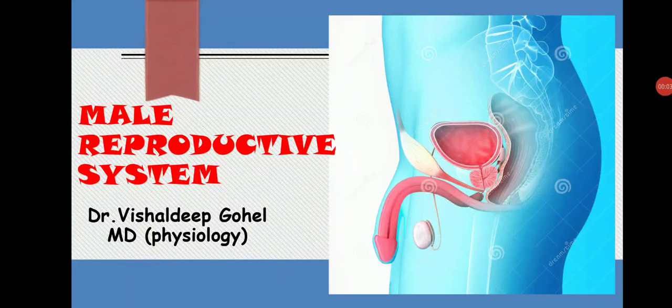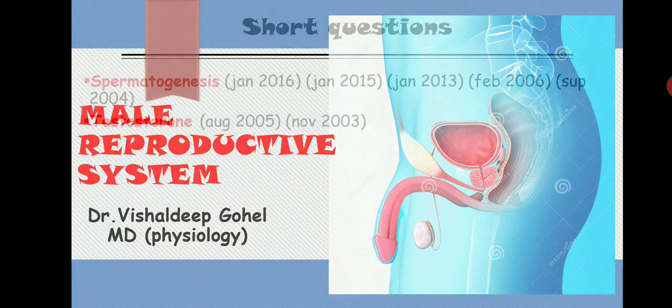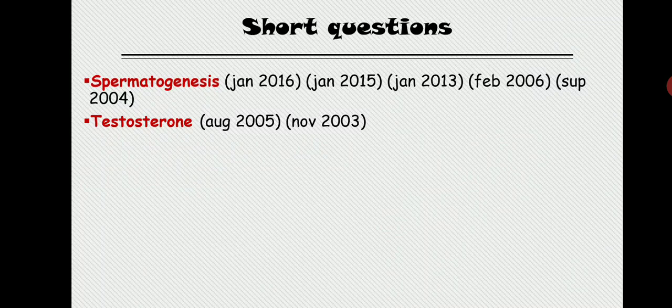Hello friends, today we are going to start our reproductive system. The most important thing you need to know is what questions are asked from this chapter. Short questions already asked include spermatogenesis and testosterone. We'll conduct the lecture in this sequence: male reproductive, female reproductive, pregnancy, formation and function of the placenta, sex determination, lactation, and finally puberty.